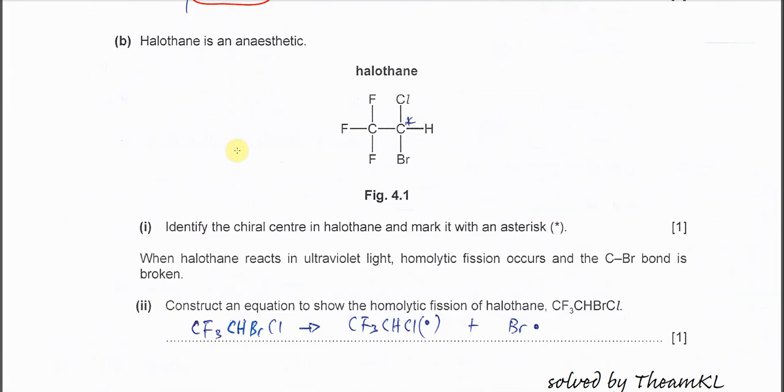Part B: Halothane is an anesthetic. Identify the chiral center in halothane and mark it with an asterisk. This carbon cannot be chiral because it has three identical fluorine groups. This carbon has one, two, three, four different groups attached, so that's why it's a chiral carbon.